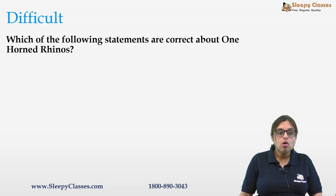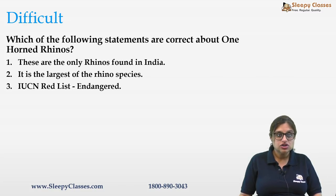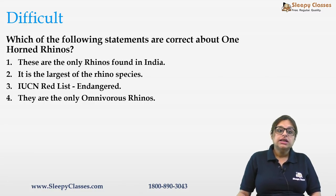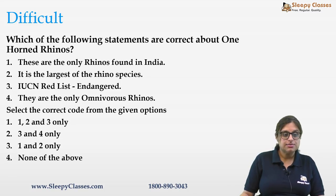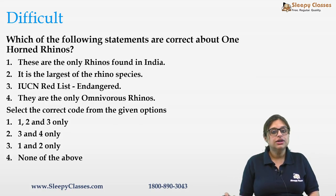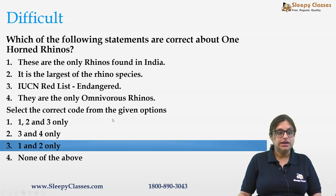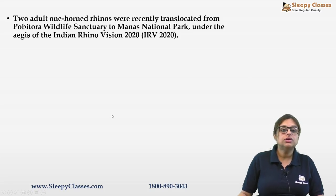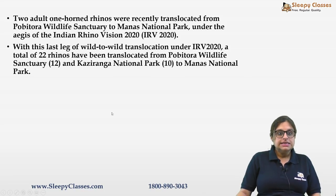Next question is about one-horned rhinos. Statements: they are the only rhinos found in India; largest of the rhino species; IUCN Red List endangered; they are the only omnivorous rhinos. The correct answer is one and two only. They are indeed the only rhinos found in India, and they are the largest rhino species. Two-thirds of one-horned rhinos are found in Kaziranga, Assam.